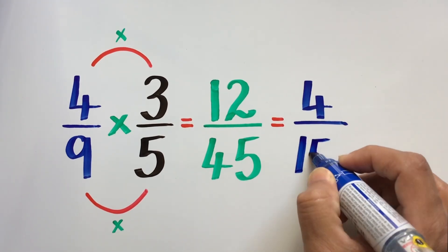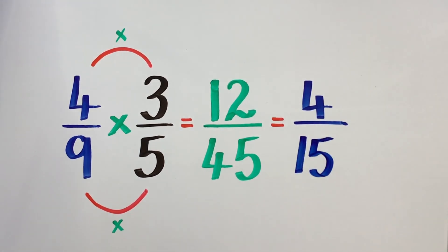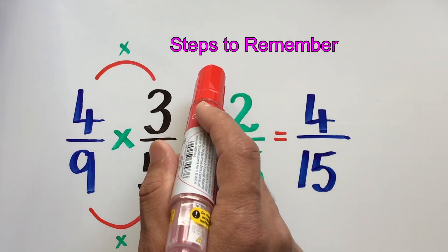On simplifying, we get 4 over 15 as a final answer. So to multiply two fractions, remember these steps.